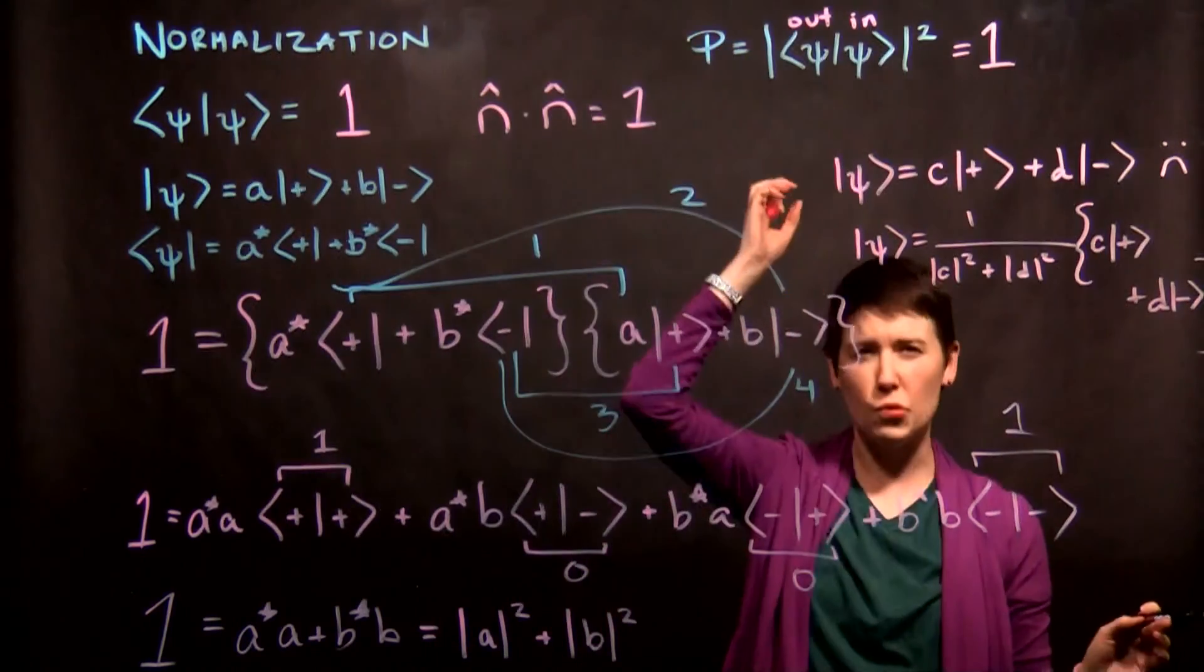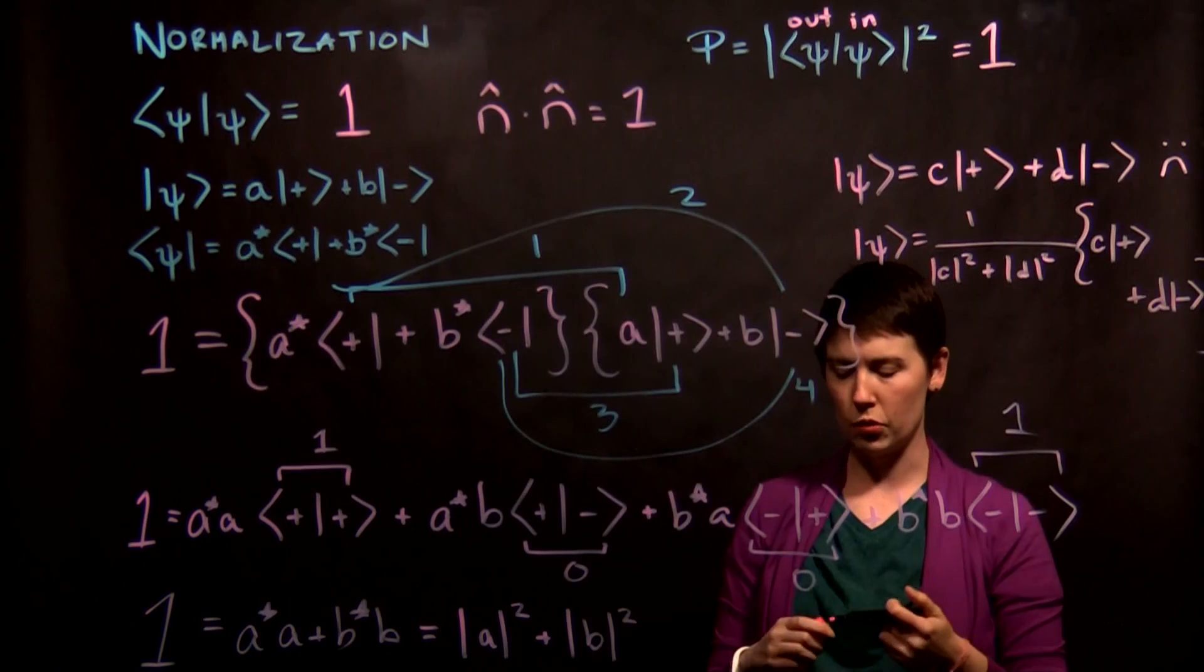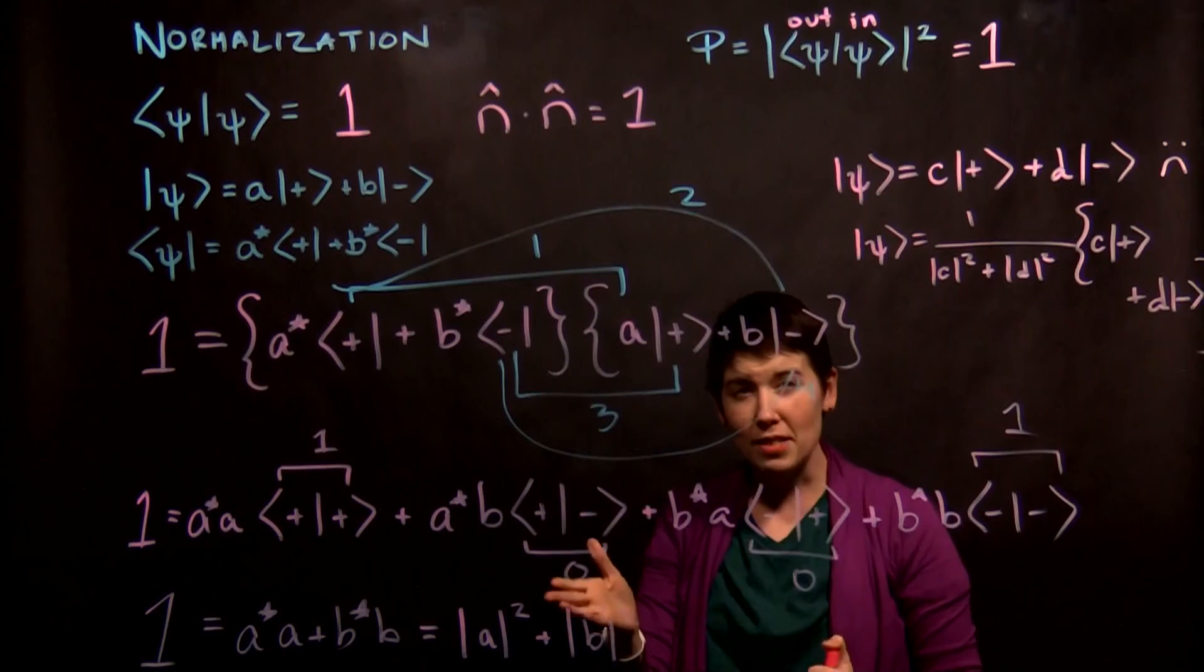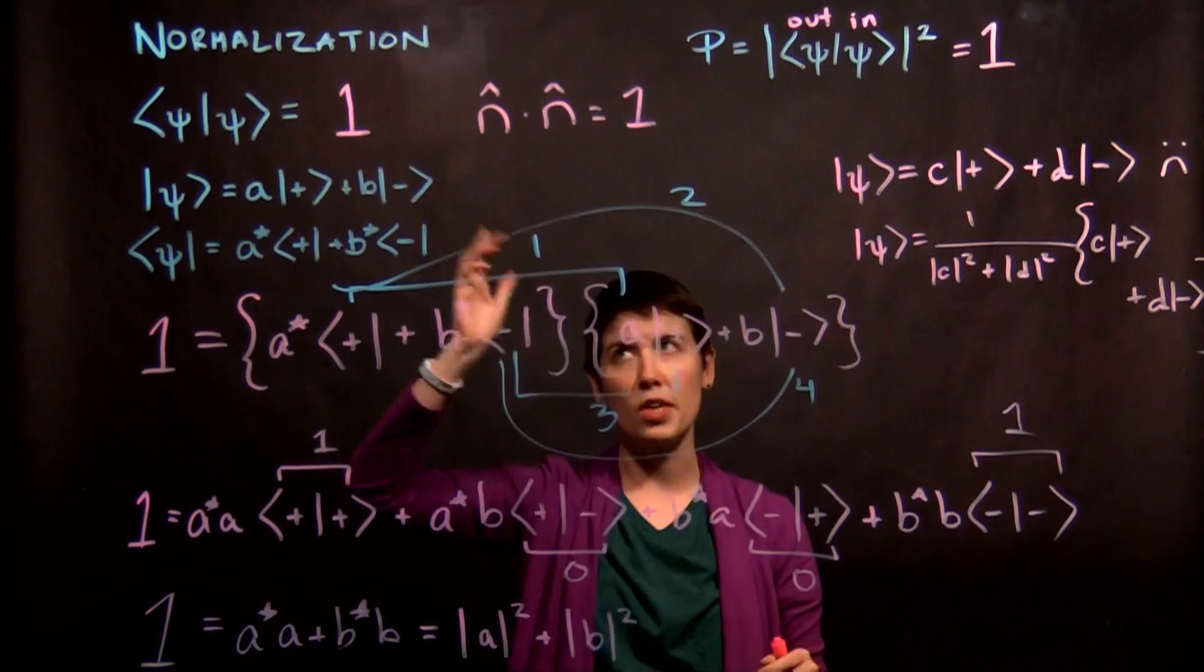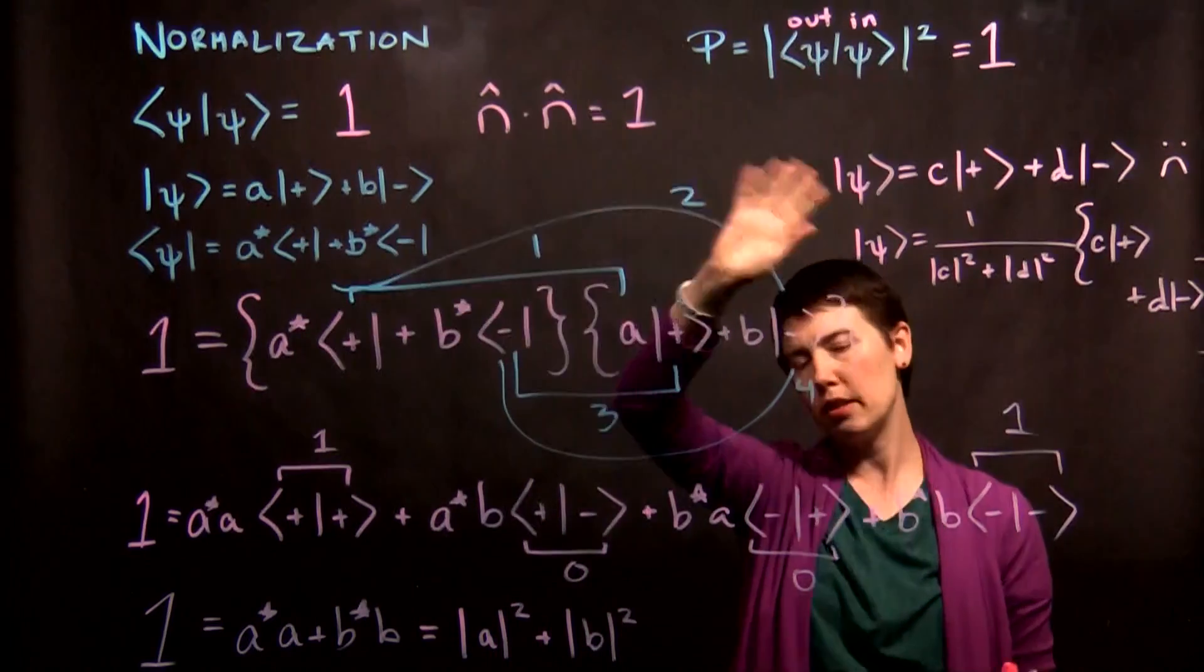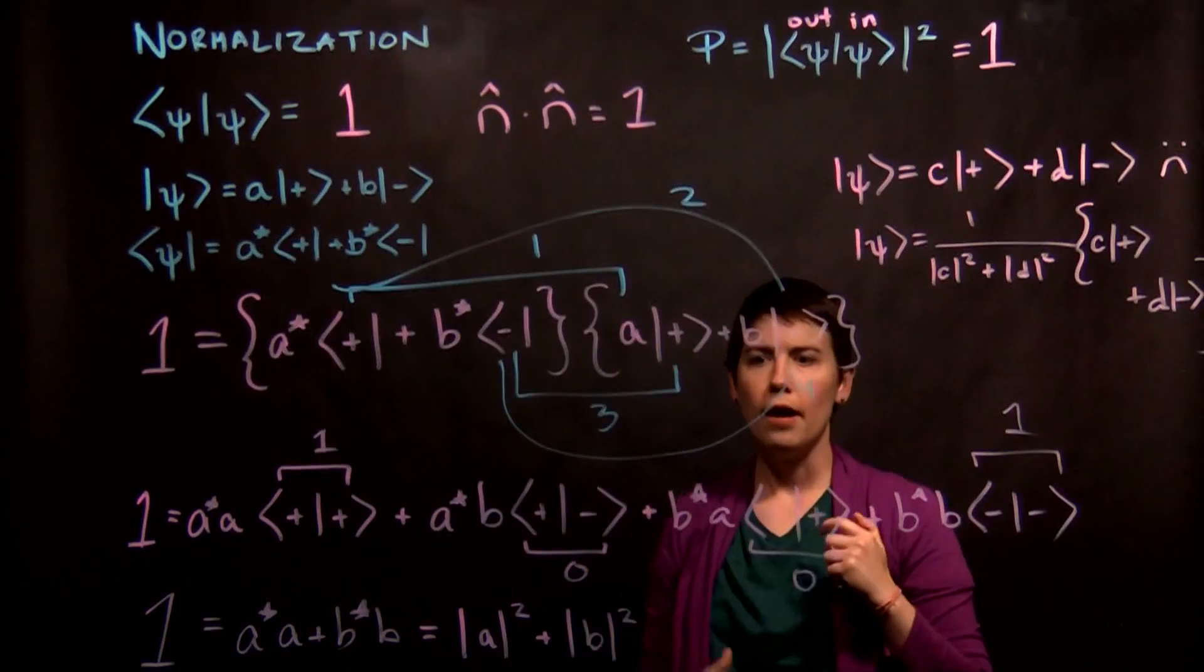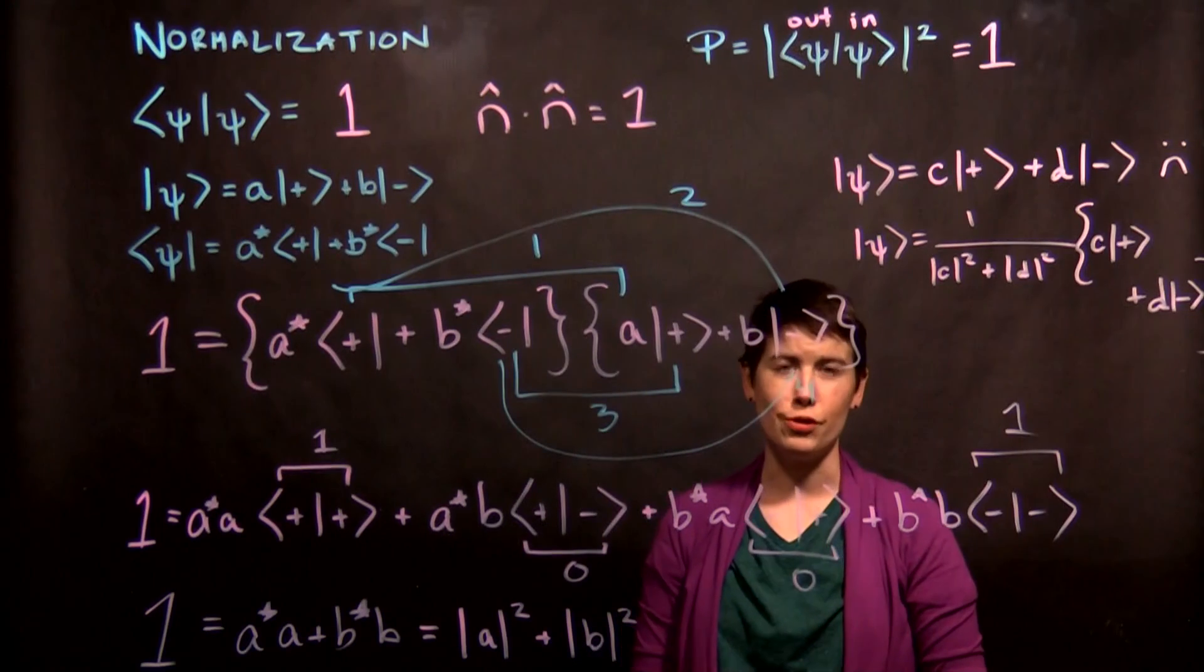Again, this probability part assumes that our state is normalized in every other calculation that we do, assumes that. So this is the basic idea of normalization. We can either draw analogies with unit vectors and think about inner products, or we can think about probability. Mathematically, it's closely related, and this will be just the first step of really every calculation you do from here on out.